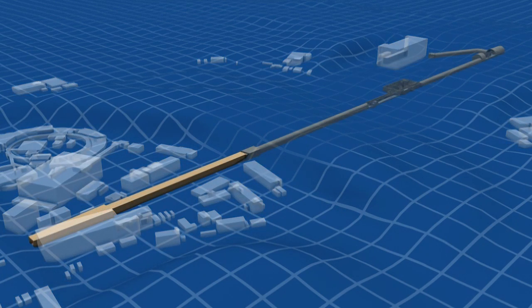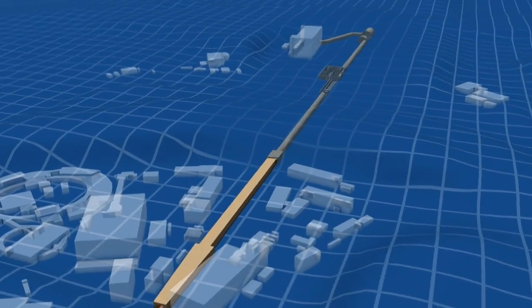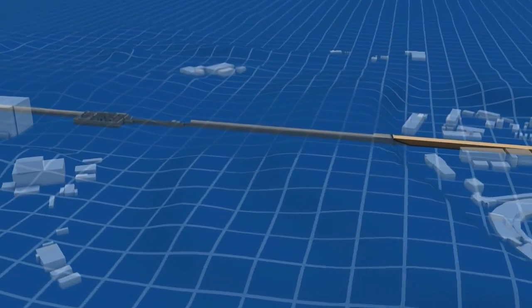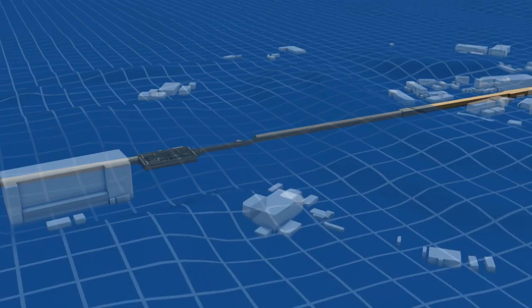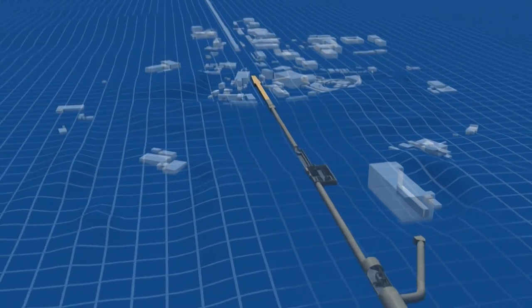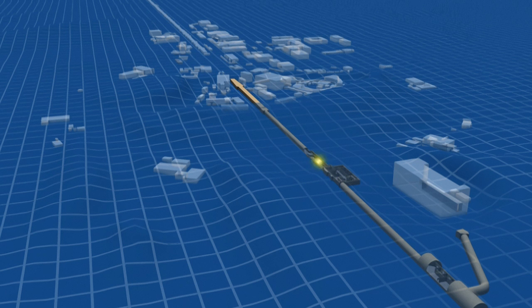The LCLS is the first laser in the world to produce hard x-rays, which can be used to see down to the level of atoms and molecules. Adding almost half a mile onto the original two-mile-long accelerator facility, the LCLS uses the final one-third of the accelerator to produce powerful pulses of x-ray laser light.